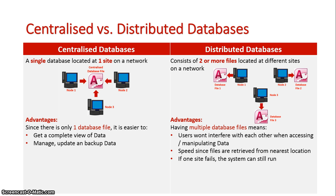The advantages of a centralized database are that since there is only one database file, you always get a complete view of the system. You're seeing it as it's being updated — the changes being made are visible to everyone. The advantages of a distributed database are that because there are multiple database files, users won't interfere with each other if someone's accessing a specific record, because you're working on a different copy.